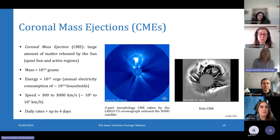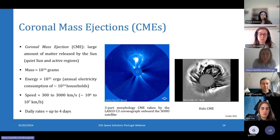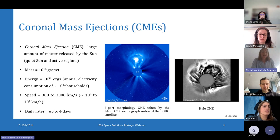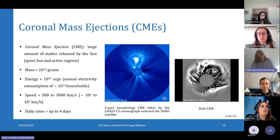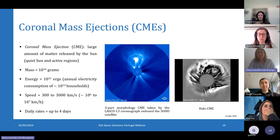First we have coronal mass ejections, which are massive bursts of magnetized plasma ejected by the Sun. Typically, a coronal mass ejection can contain 10 to the 16 grams of matter. It has a speed of 300 kilometers per second up to 3,000 kilometers per second during more active times, which corresponds to 10 million kilometers per hour. Depending on solar conditions, a coronal mass ejection can take one to four days to reach Earth. They can originate from both the quiet sun and from more active regions where we have strong concentrations of magnetic fields, and when they originate from active regions they are usually faster.